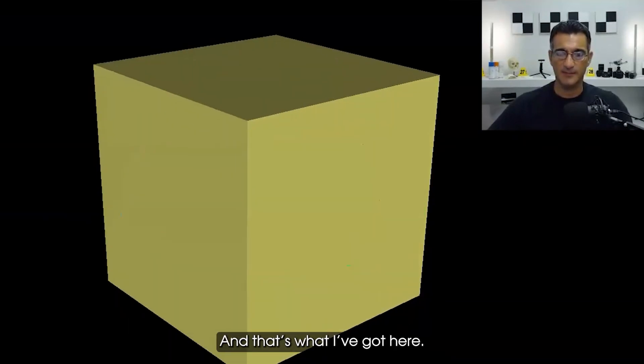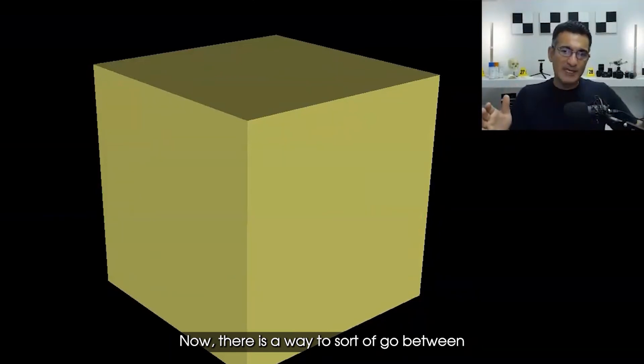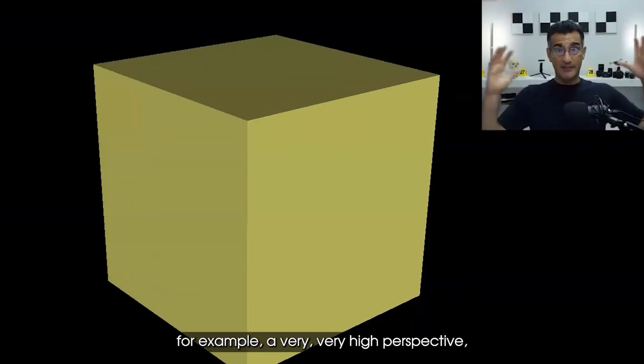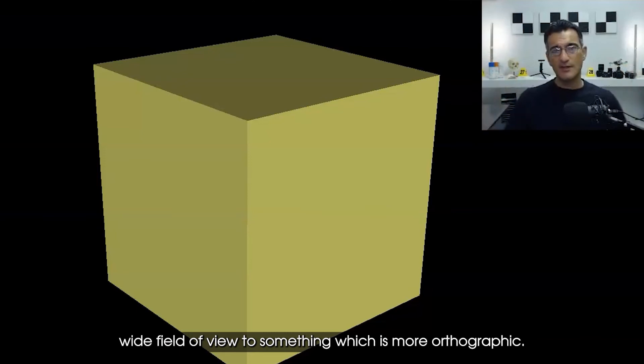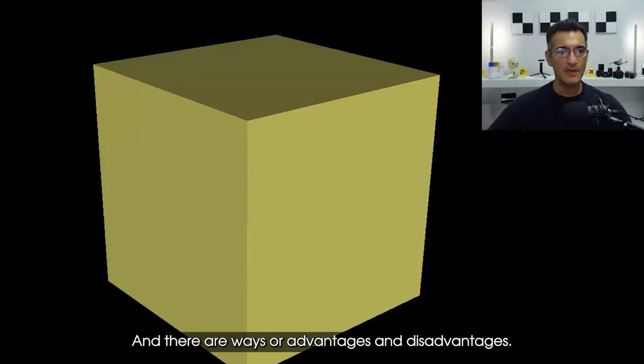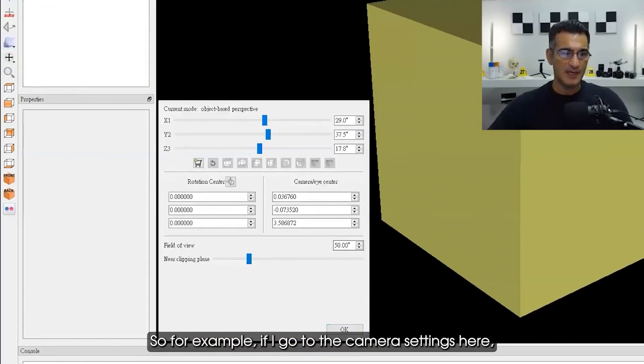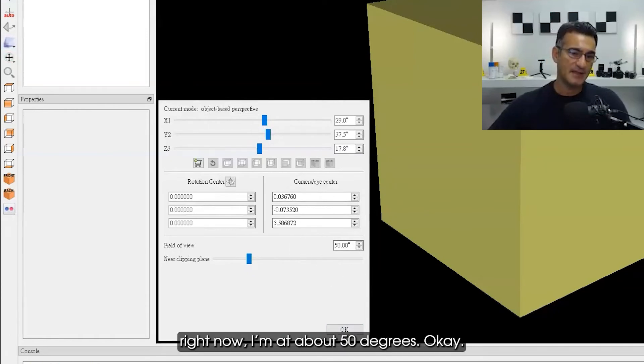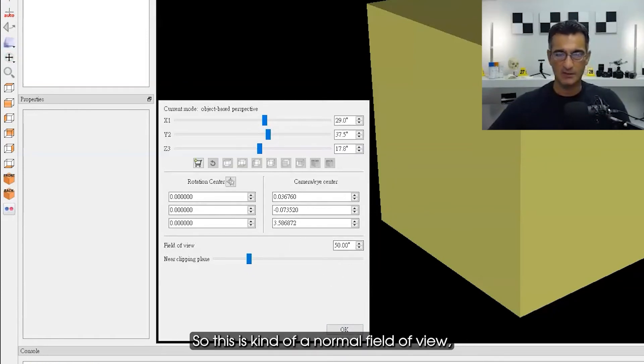Now there is a way to sort of go between a very high perspective wide field of view to something which is more orthographic, and you have to be careful of that. There are advantages and disadvantages. For example, if I go to the camera settings here, if you look down in this area right now I'm at about 50 degrees. This is kind of a normal field of view.